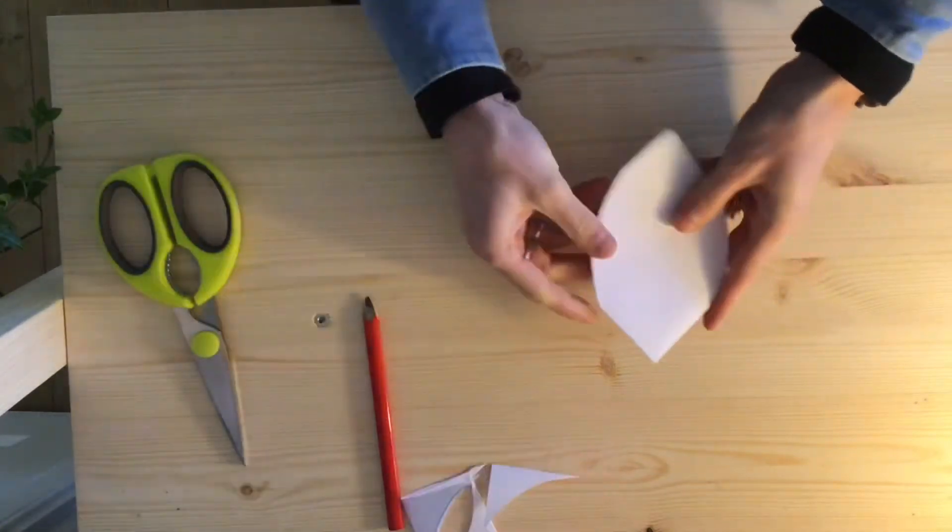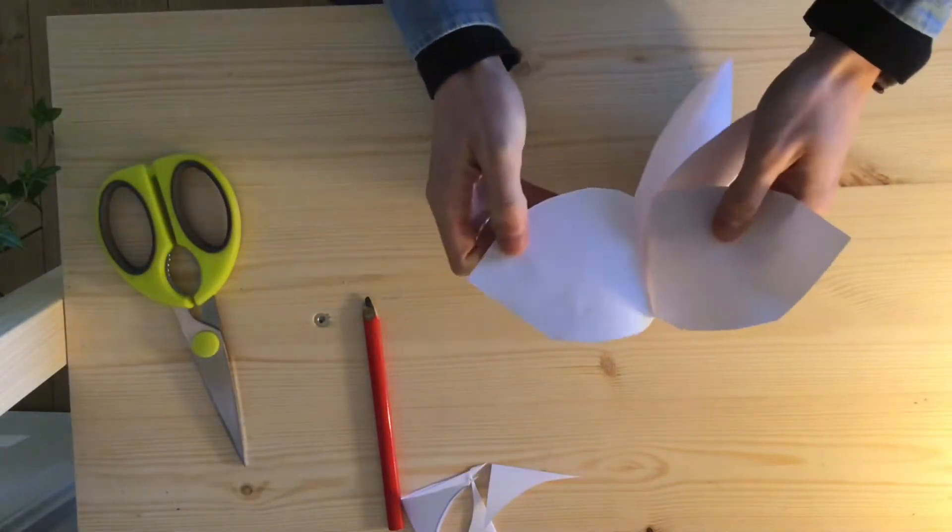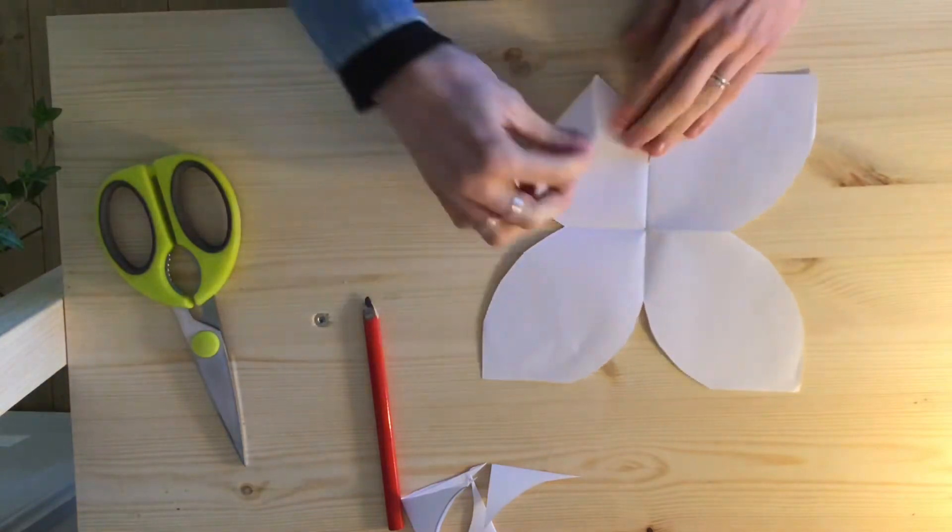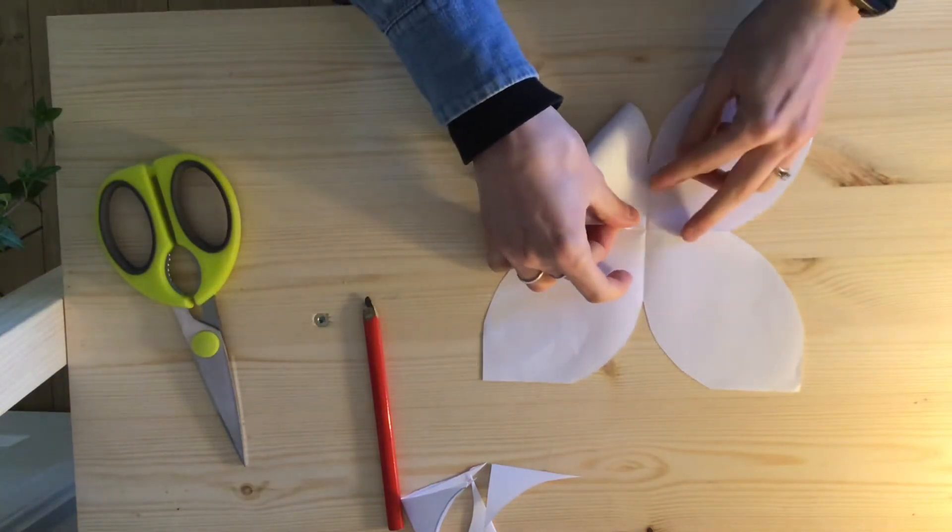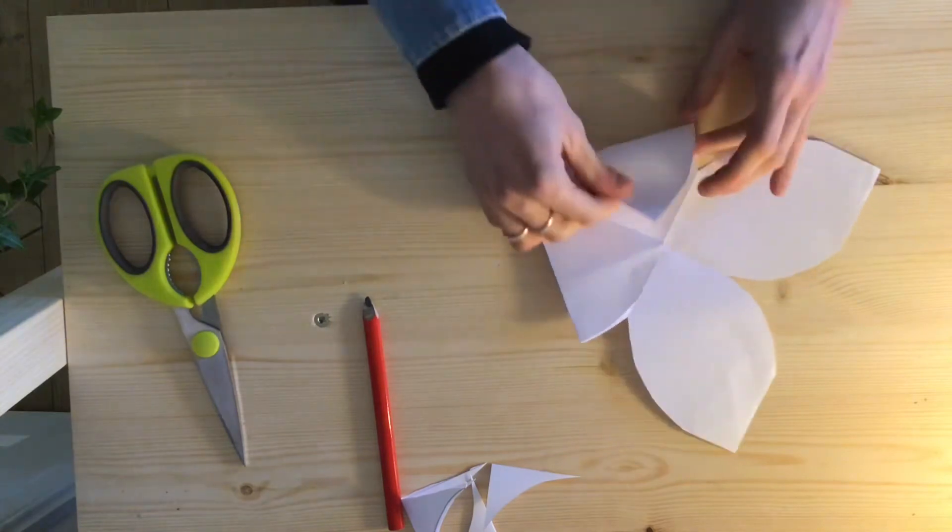Then open out your paper and you should get a flower shape. Fold each corner into the middle, make sure you do this with every single petal.